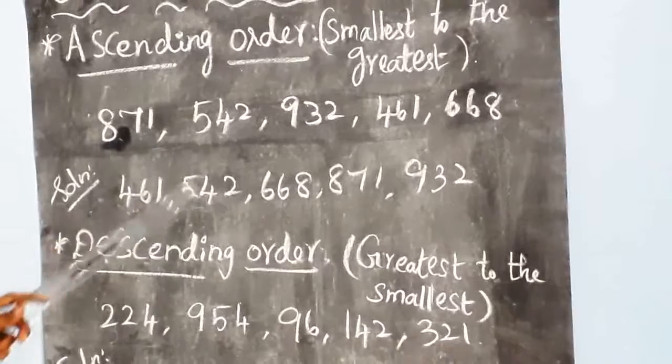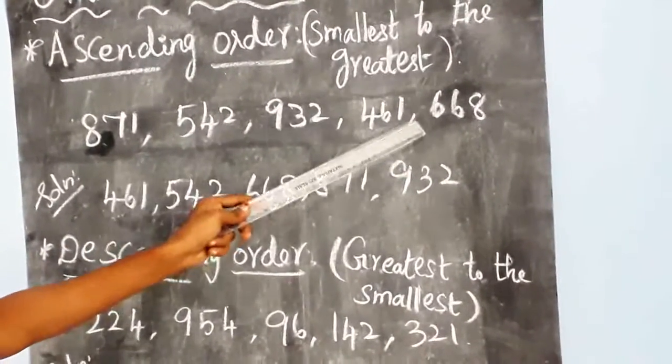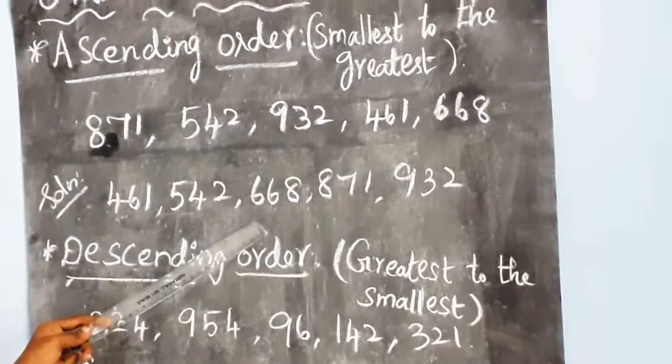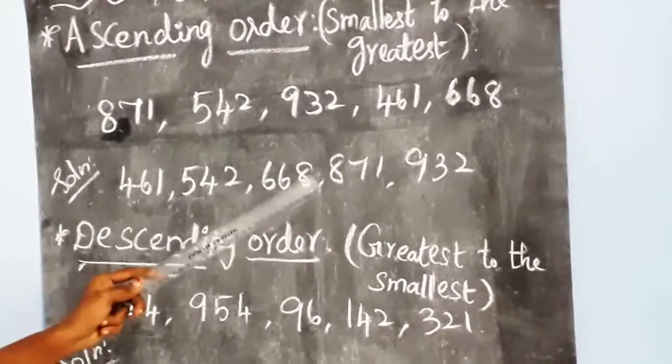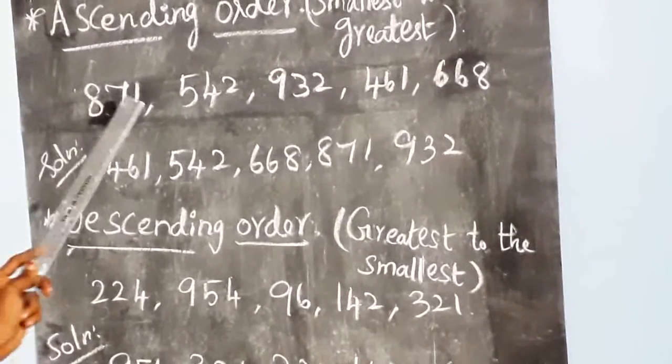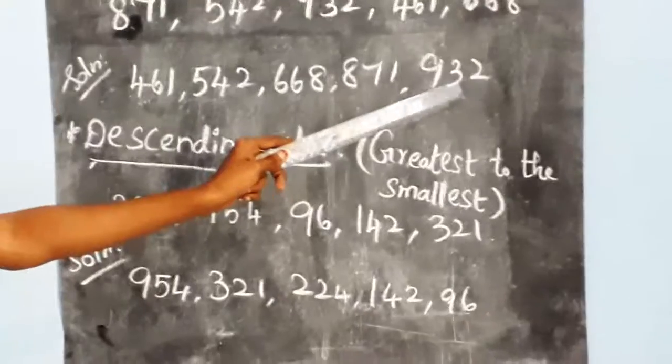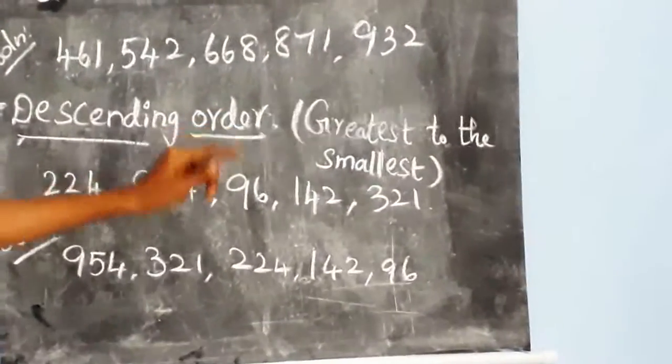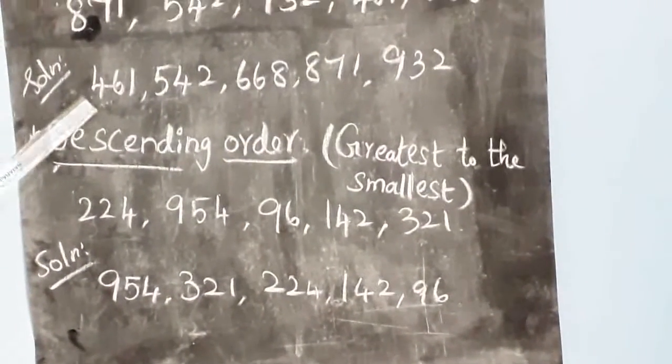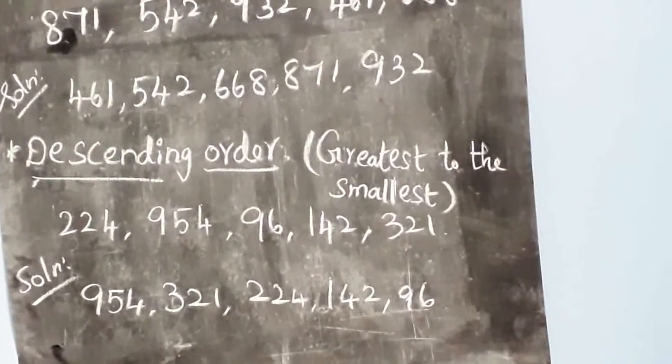Then 5, so 542. Then after 5, 668. Then after 6, 8 will be given, so 871. The last one is 932. Because it is going from smallest to greatest, that is the ascending order.